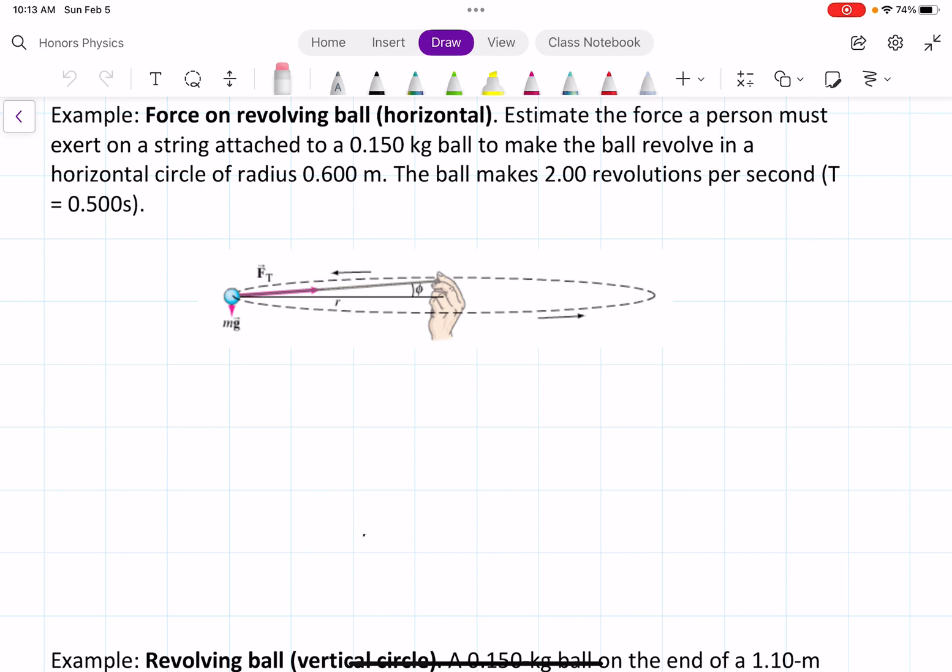The ball makes 2 revolutions per second, which we could also write as t equals 0.5 seconds, or the period equals 0.5 seconds.